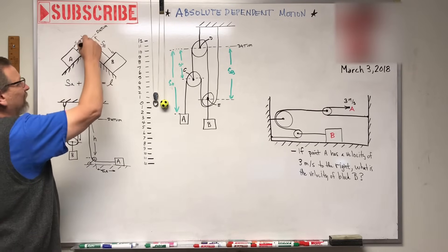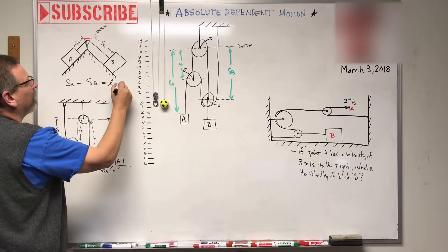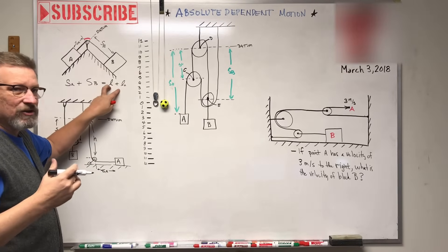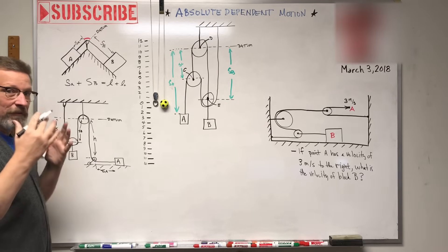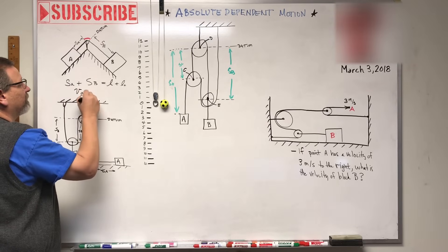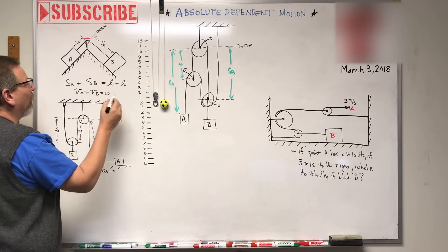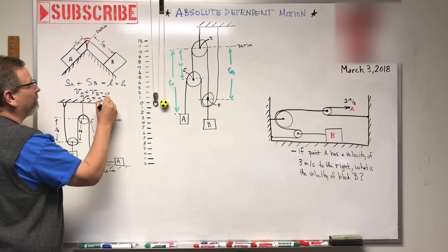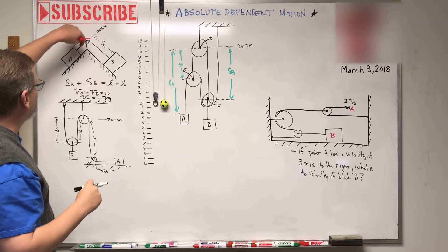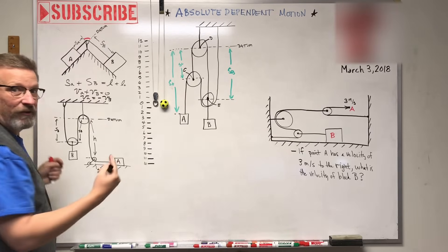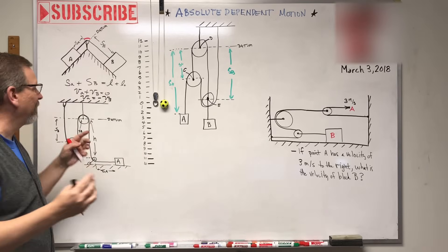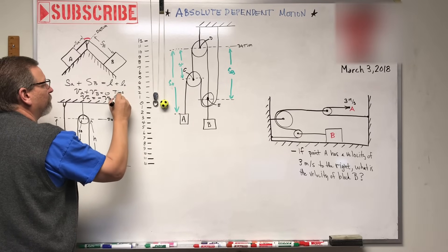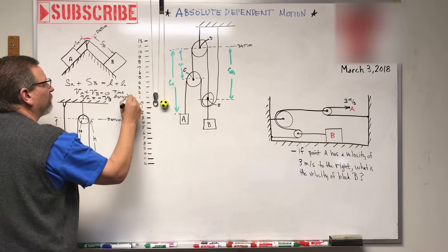Right, plus that little constant arc length — both of these things are constant. So if I take the derivative of this, I'm going to get my velocity equation: the velocity of A plus the velocity of B is equal to zero. Or I could just say the velocity of A is equal to negative velocity of B. So if velocity of A moves down, then B is going to move up — that's what the negative means. This is called a time derivative.